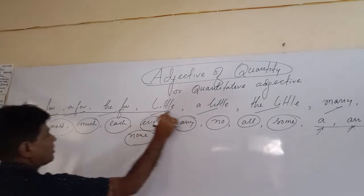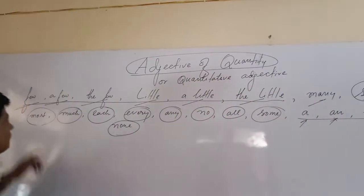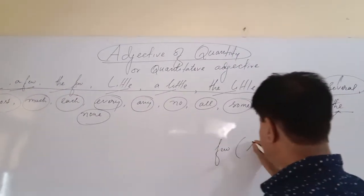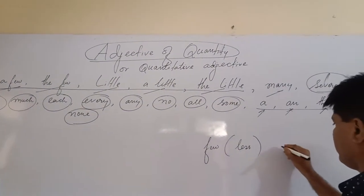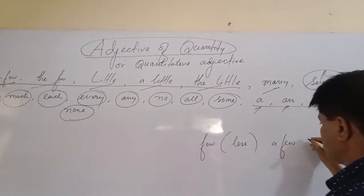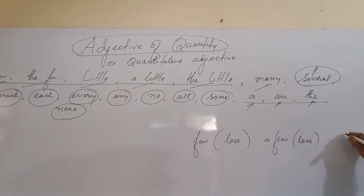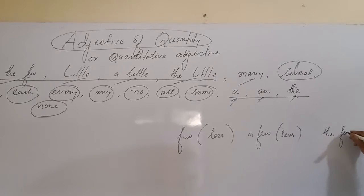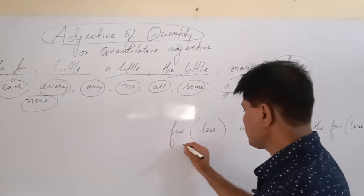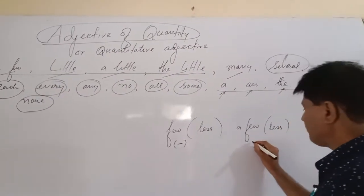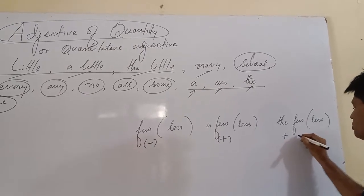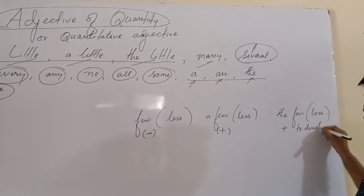First I will talk about these six words: little, a little, the little, few, a few, and the few. 'Few' means less — it defines a negative sense. 'A few' also means less, but it defines a positive sense. 'The few' is used to denote all together, also a positive sense.